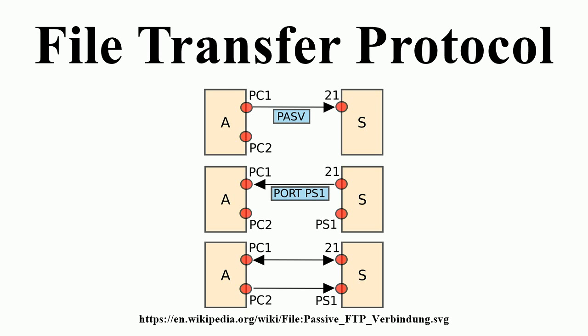While transferring data over the network, different data representations can be used. ASCII mode is used for text; data is converted from the sending host's character representation to 8-bit ASCII before transmission, and then to the receiving host's character representation. This mode is inappropriate for files that contain data other than plain text. Image mode: the sending machine sends each file byte for byte, and the recipient stores the byte stream as it receives it. EBCDIC mode is used for plain text between hosts using the EBCDIC character set. Local mode allows two computers with identical setups to send data in a proprietary format without converting to ASCII.